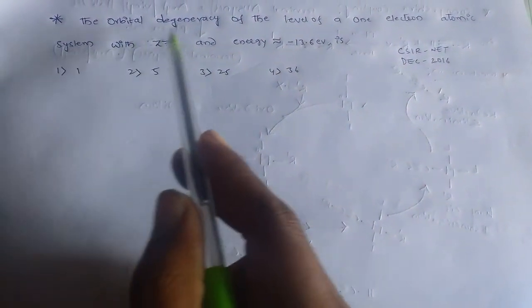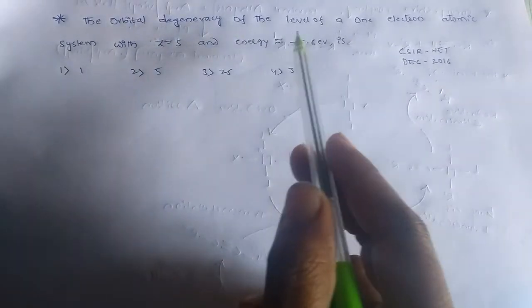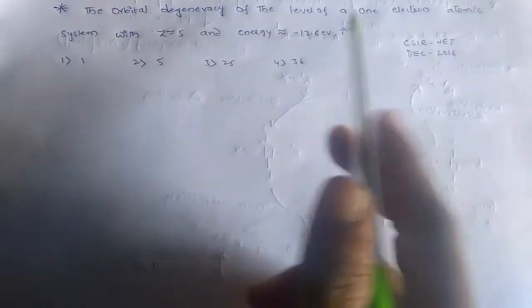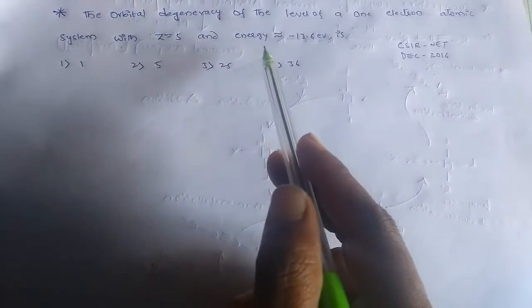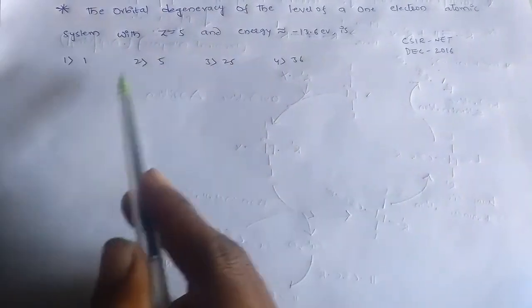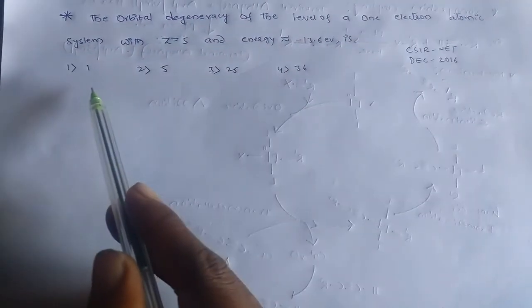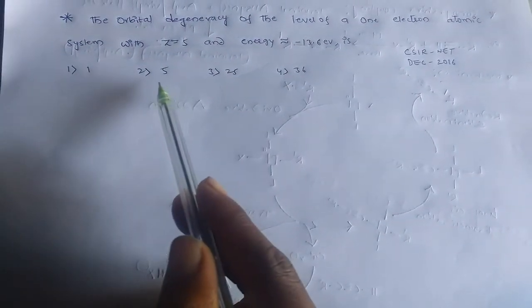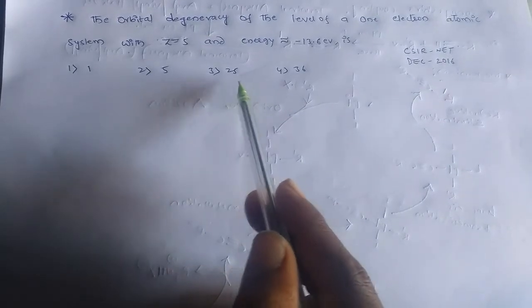The question is, the orbital degeneracy of the level of a one electron atomic system with Z equals 5 and energy approximately minus 13.6 electron volts is. We have four options: 1, 5, 25, and 36.